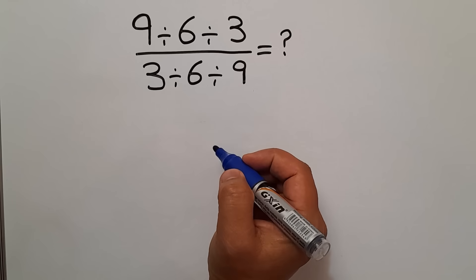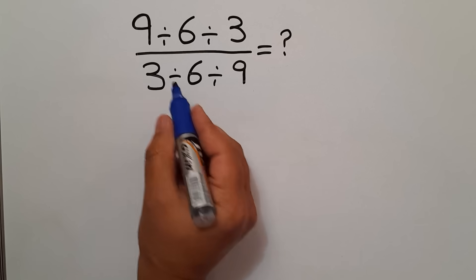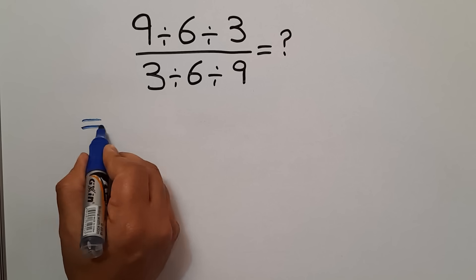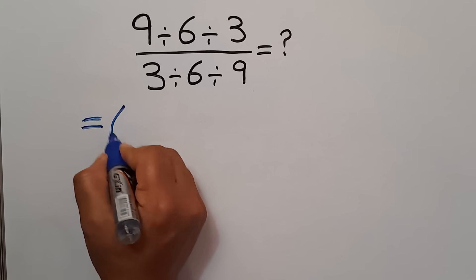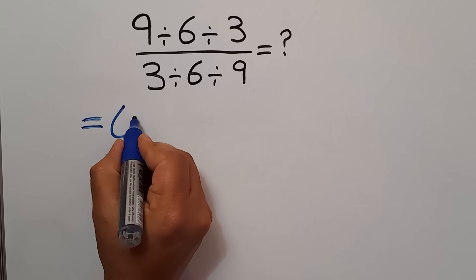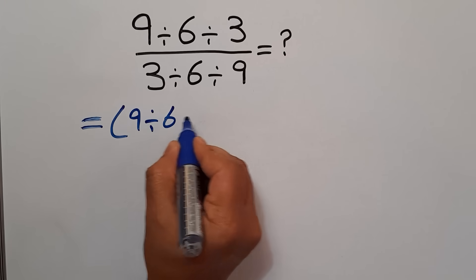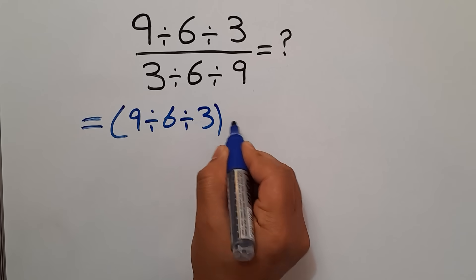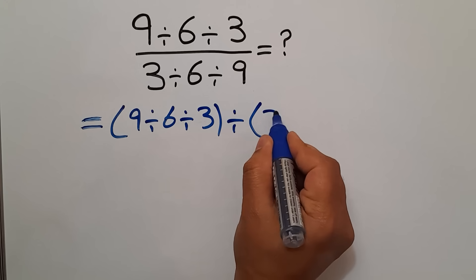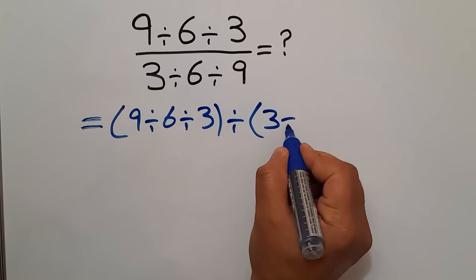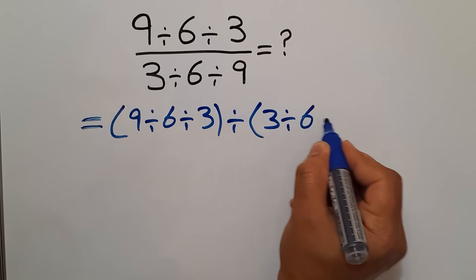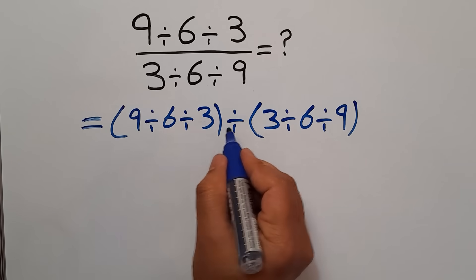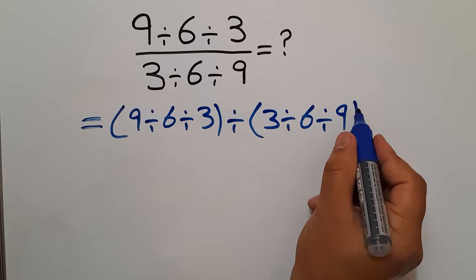Are you ready to solve? Let's go ahead and get started. This fraction can be written as parentheses 9 divided by 6 divided by 3, divided by parentheses 3 divided by 6 divided by 9 — the numerator divided by the denominator.